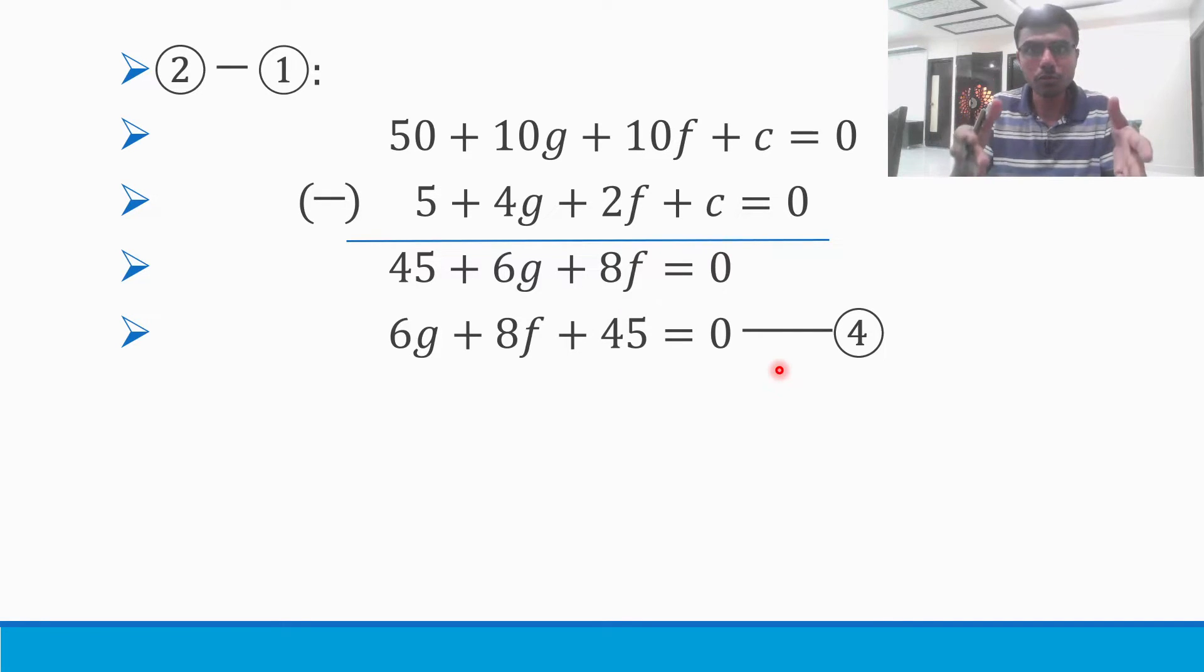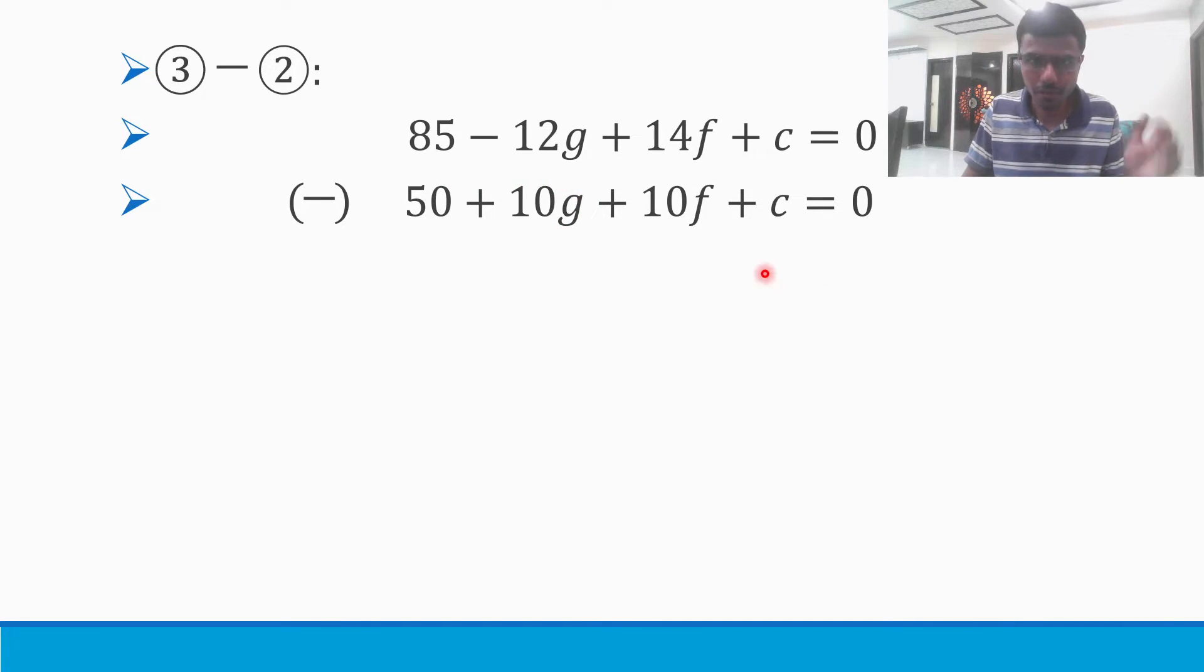As I mentioned, I'm going to now do equation 3 minus equation 2. This is my equation 3 and this is my equation 2. Subtract it. 85 minus 50 is 35.